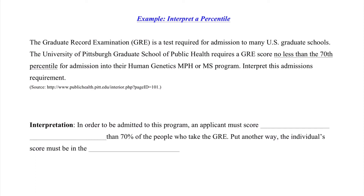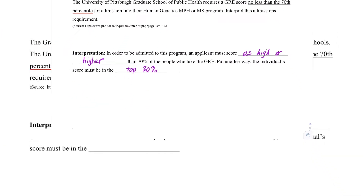We're told the GRE is a test required for admission to many U.S. grad schools. The University of Pittsburgh Graduate School of Public Health requires a GRE score no less than the 70th percentile for admission into their human genetics program. To interpret this admissions requirement, we just need to know the definition of percentile. The 70th percentile represents the value such that 70% of the observations are less than or equal to that value. In order to be admitted, an applicant must score as high or higher than 70% of the people who take the GRE — that is, an individual's score must be in the top 30%.